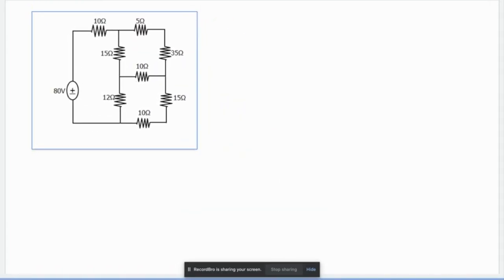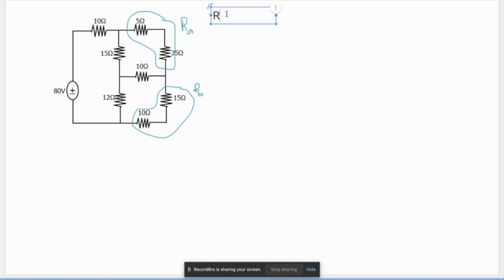Here is the example. This will lead to a Y to Delta transformation, because after making the series of these two it will yield to a circuit where three resistors are connected in one node. So let's say this will be your Ra, and this is Rb. So Ra is simply equal to 5 plus 35 is equal to 40 ohms.